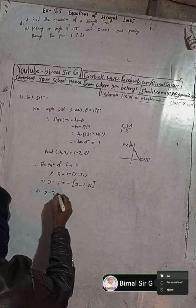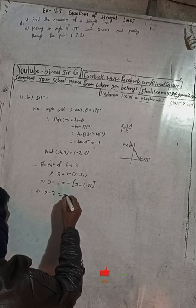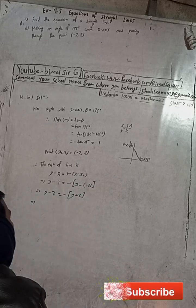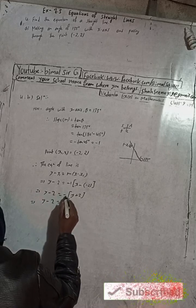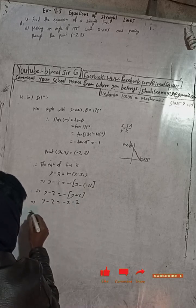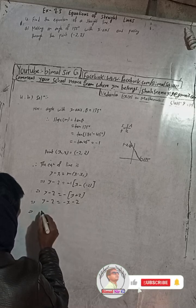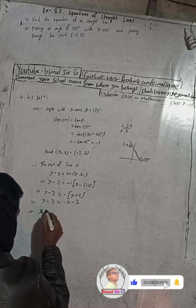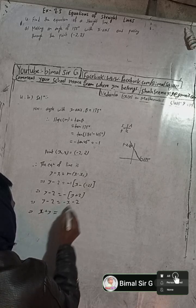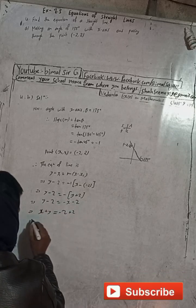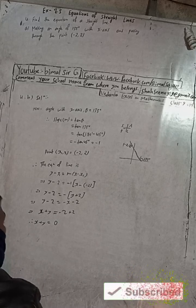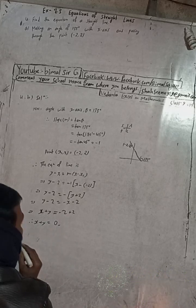So y minus 2 equals minus 1 times (x plus 2), which gives y minus 2 equals minus x minus 2. Bringing minus x to the left side gives plus x, so x plus y minus 2 equals minus 2. Therefore x plus y equals minus 2 plus 2 equals 0. So the solution is x plus y equals 0.